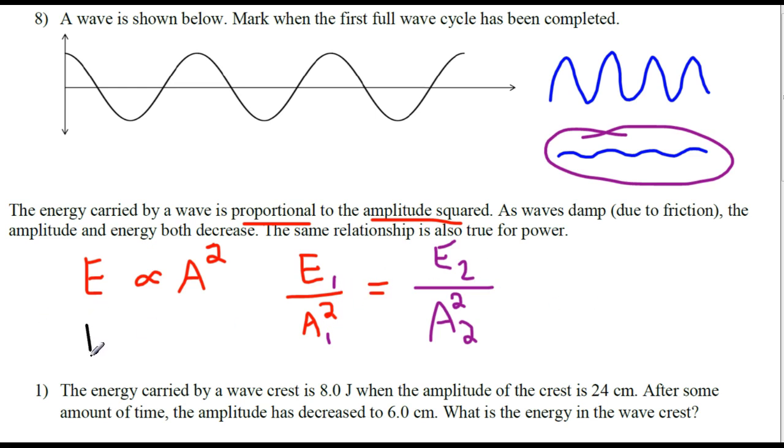The same is true for power. Power is also proportional to amplitude squared. And therefore, we could say the ratio of P to A squared is always a constant, and if it's always a constant, then you can take some first power, divide by a first amplitude squared, and you'll get the same value if you take a second different power and divide by a second different amplitude squared.